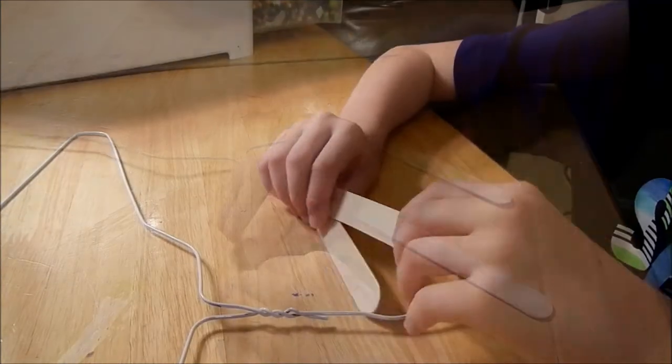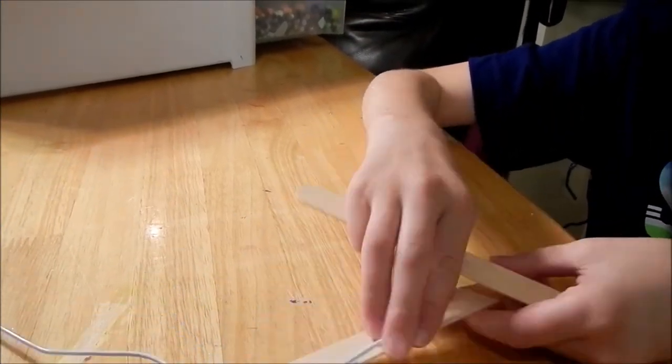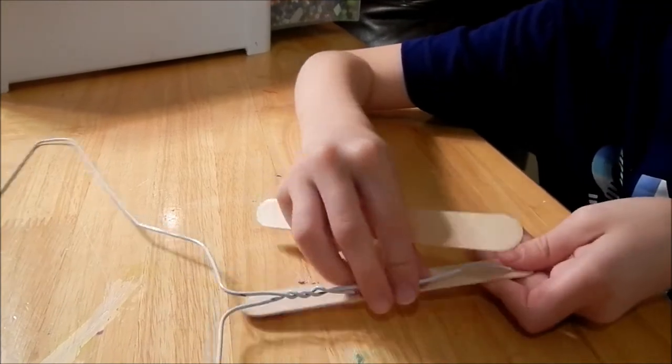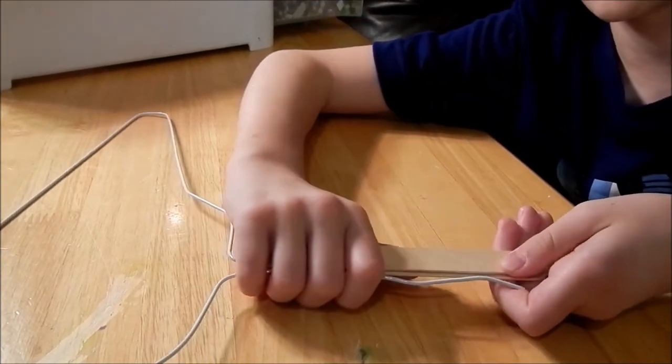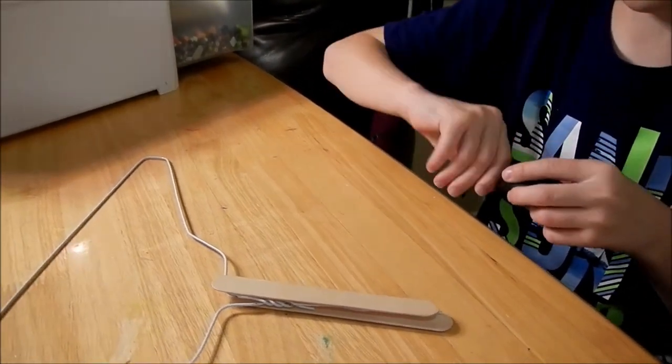Now we're going to grab our two craft sticks and make a sandwich with them. We'll use electrical tape and roll it around.